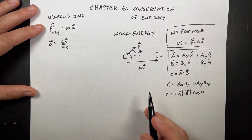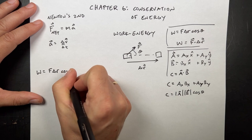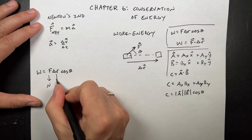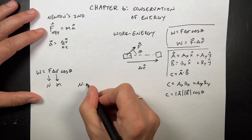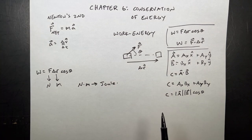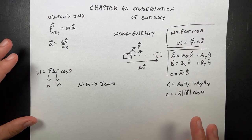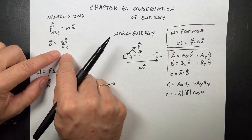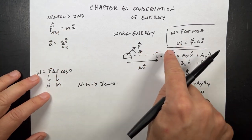If we have work W equals F delta R cosine theta: force is in newtons, delta R is in meters, cosine theta has no unit — so newtons times meters gives us a unit we call a joule. That's a unit of work and a unit of energy. The work-energy principle is a different way of thinking about motion: instead of focusing on changes in velocity and time, we focus on displacements. Work is not a vector.